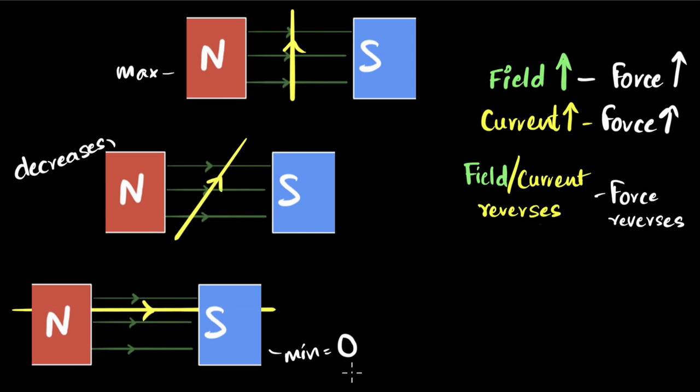So the strength of the force not only depends upon the strength of the field and the strength of the current, it also depends upon the angle. You get a maximum force when the angle is 90 degrees, and you get zero force when the angle is zero, when they are parallel to each other.